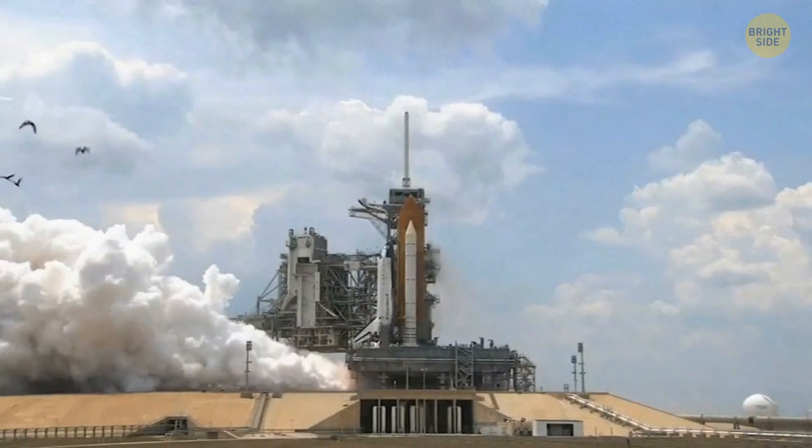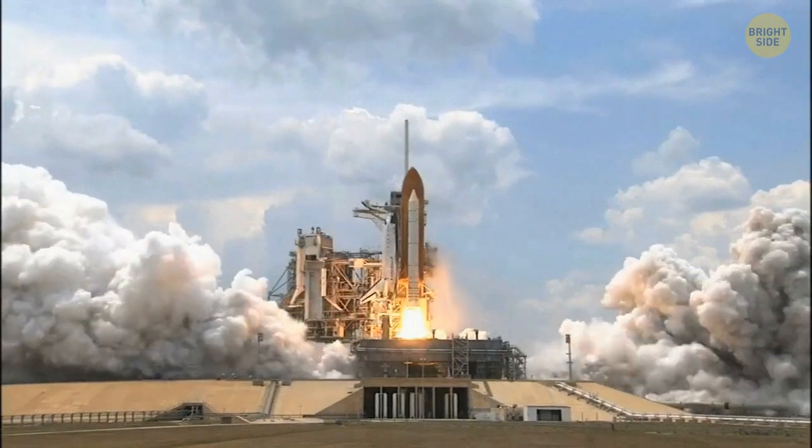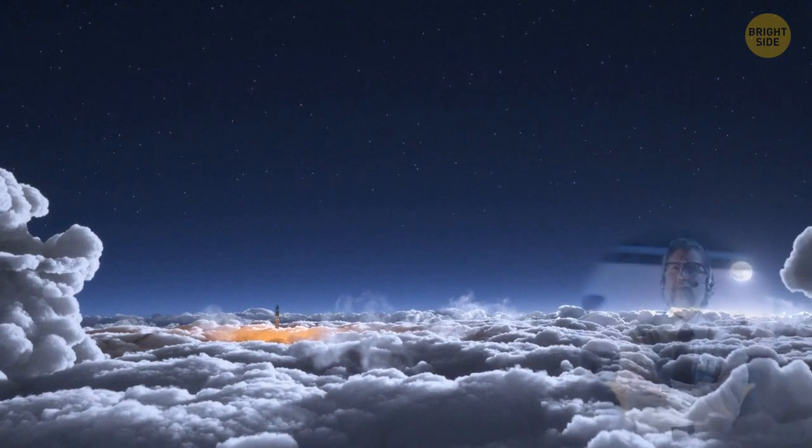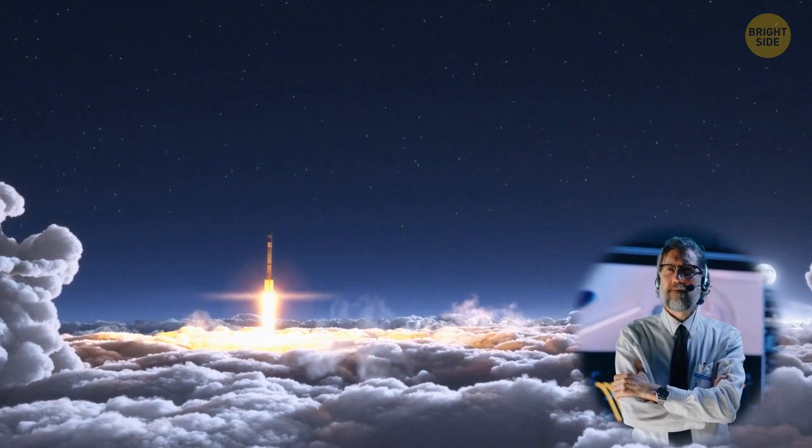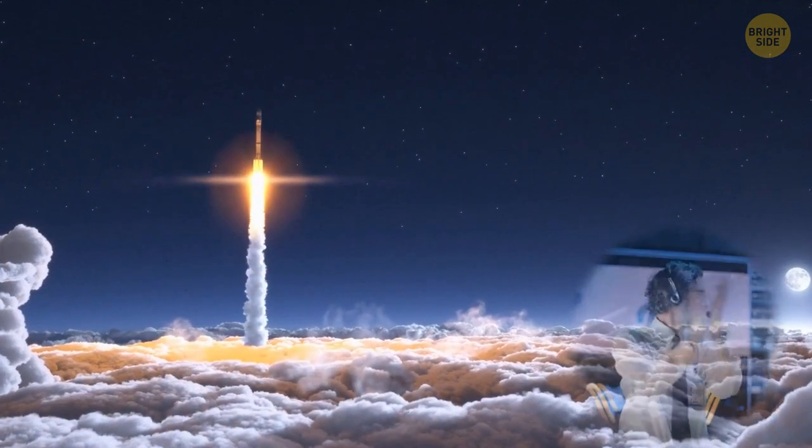Tons of fire and smoke fly upward, and the rocket launches. The Delta IV Heavy is one of the most powerful rockets people have ever made. Three massive engines burn tons of fuel, helping the spacecraft gain altitude.